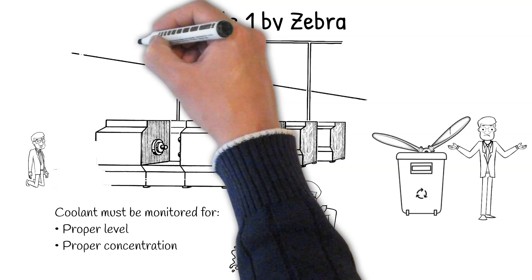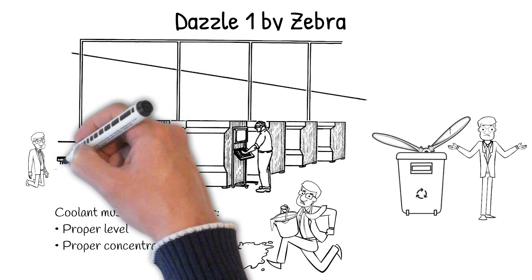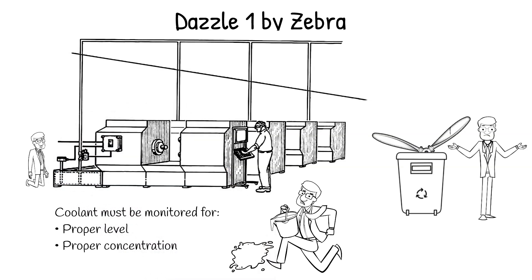The Dazzle One by Zebra is an automated coolant delivery system that constantly monitors your coolant levels and then adds coolant and water at the appropriate concentration to fill coolant sumps as needed.